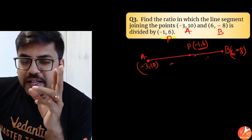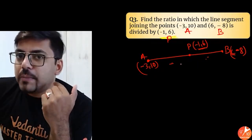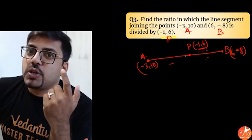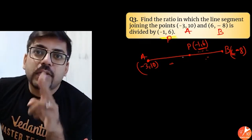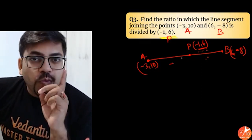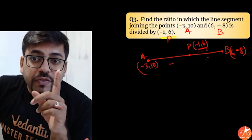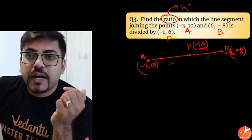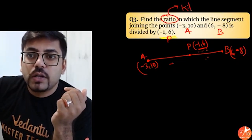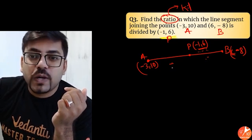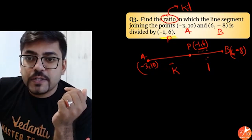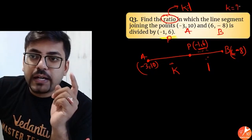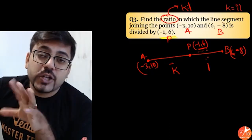Most students think: earlier M is to N was given, we found X and Y; now X and Y are given, we find M is to N by assuming the ratio to be M is to N. But that will be a wrong approach. Whenever you have to find the ratio and it is not known, you will assume the ratio to be k is to 1. You assume that point P is dividing A and B in k is to 1. Whatever the value of k you get, that ratio will be your answer.